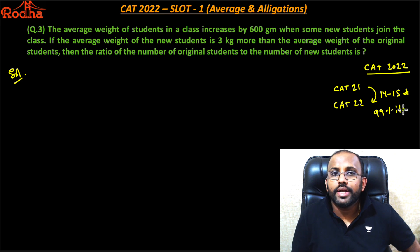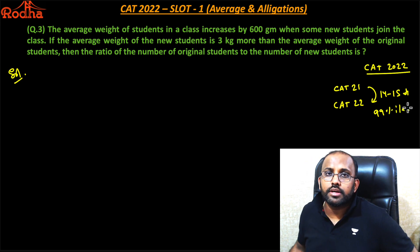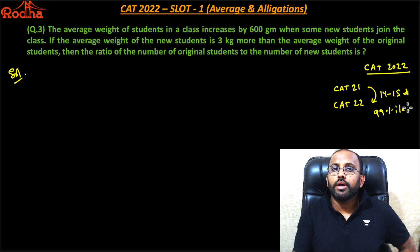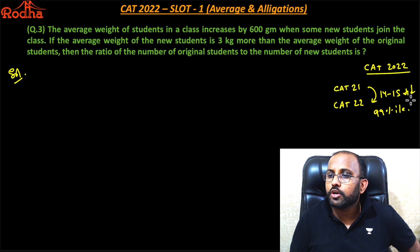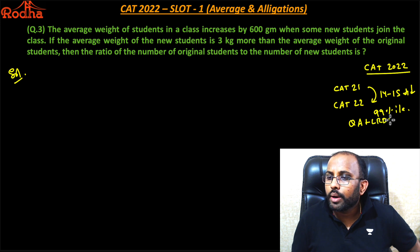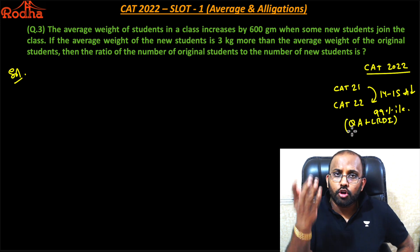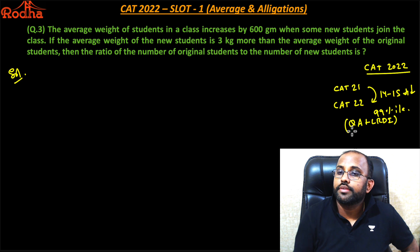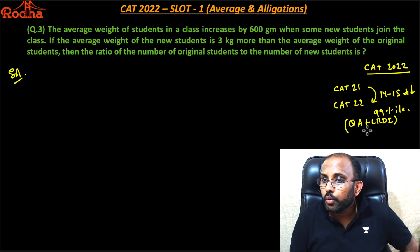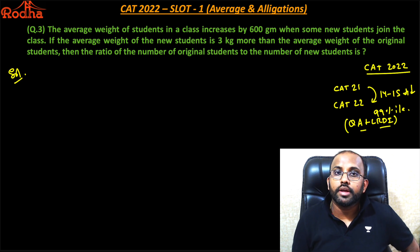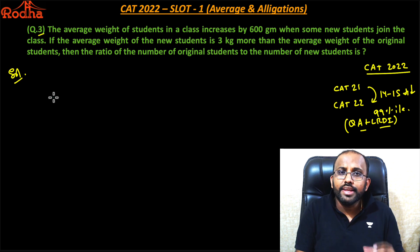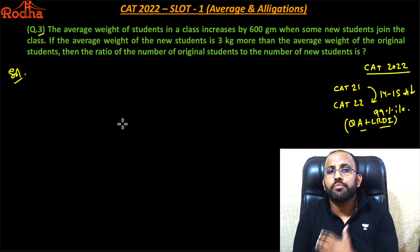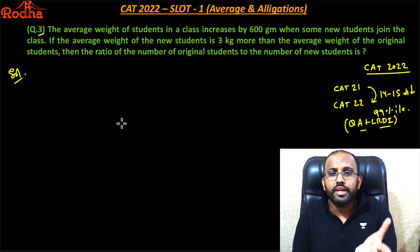If CAT 21 was 100 marks, then CAT 22 had a major drop — in QA and LRDA especially. The verbal cutoff is the same in some slots, but QA and LRDA took a hit. But look at question number 3 — again a very doable question. We've read it in detail and it's an easy variety.